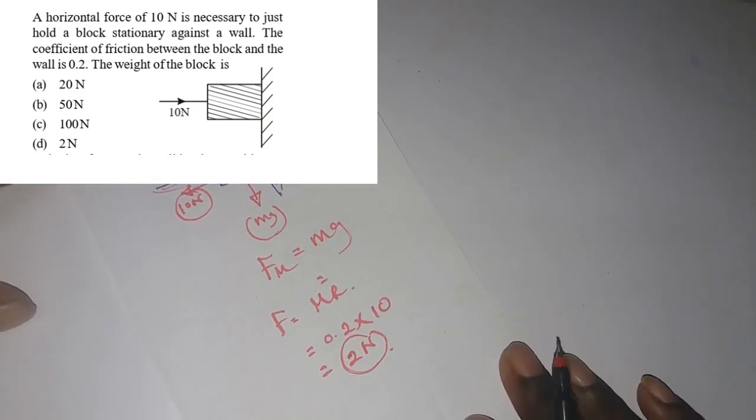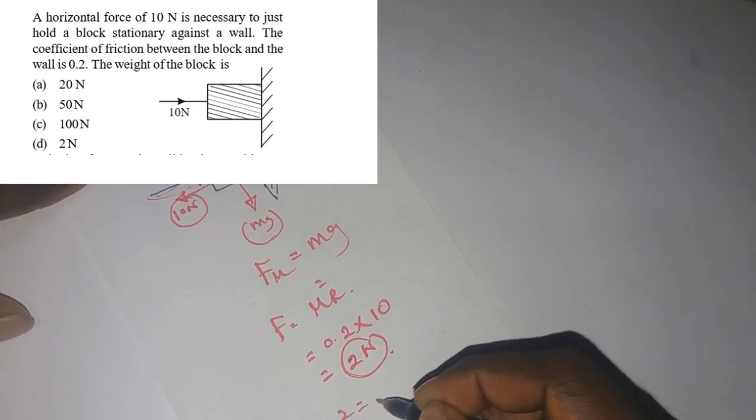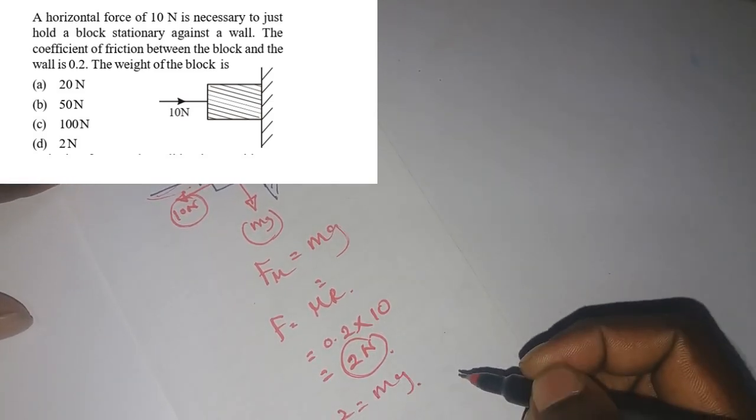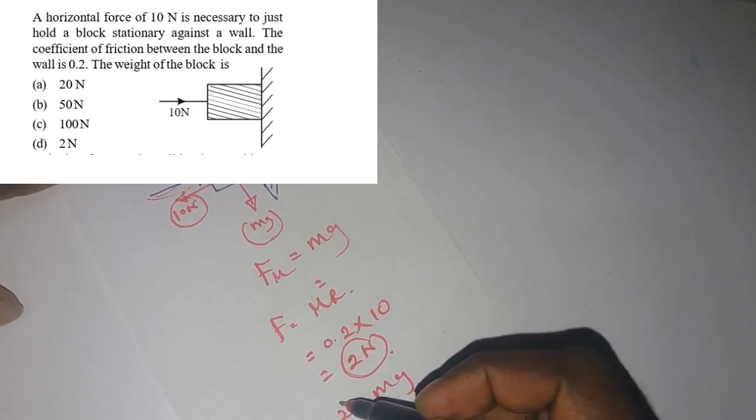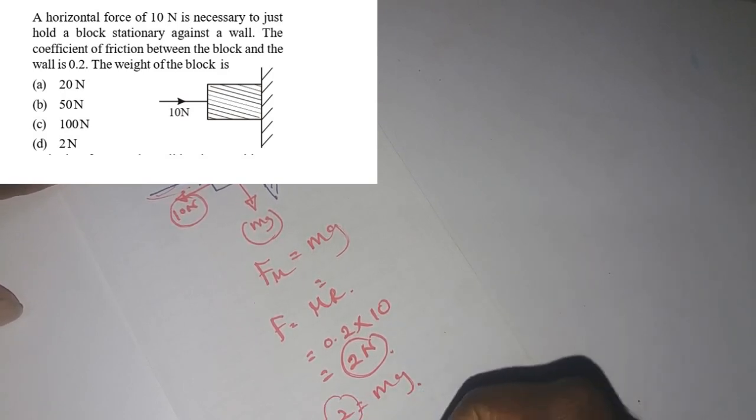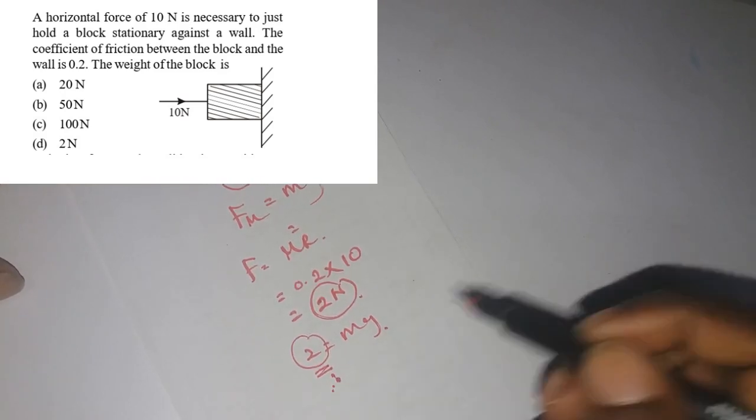So the weight has to be 2 newton equals mg. So they're asking us the weight of the block. So the weight is 2 newton, that's the answer.